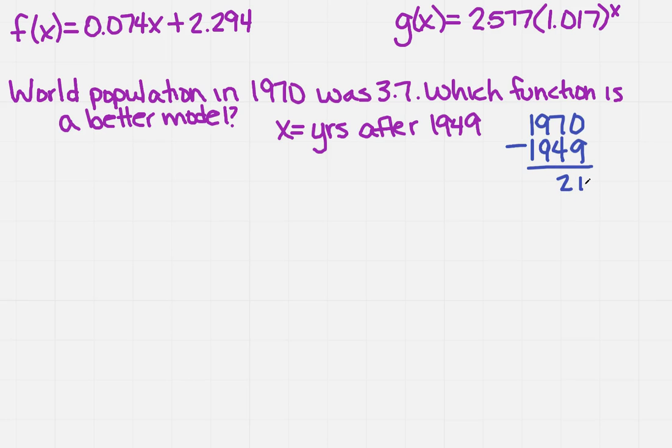What I'm going to do is, everywhere there's an x in each function, I'm going to plug in 21. So I'm going to do f of 21 equals 0.074 times 21 plus 2.294.